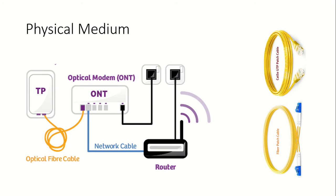Here you can see a typical physical network setup. A device is connected to a switch or router via optical fiber, and this is connected to a wireless router — you can see the wireless signal. There are also copper cables and power supply cables visible here.